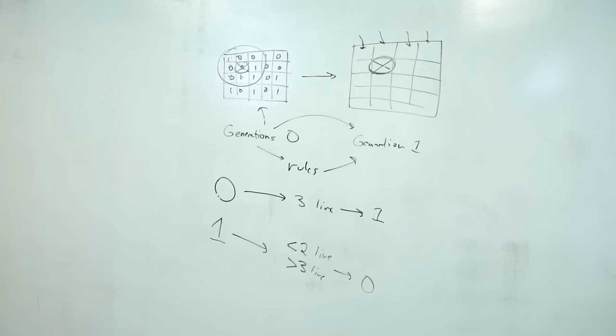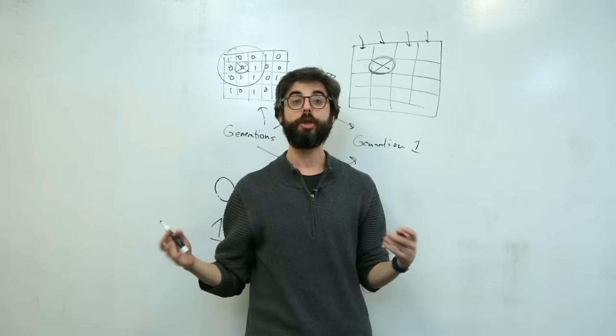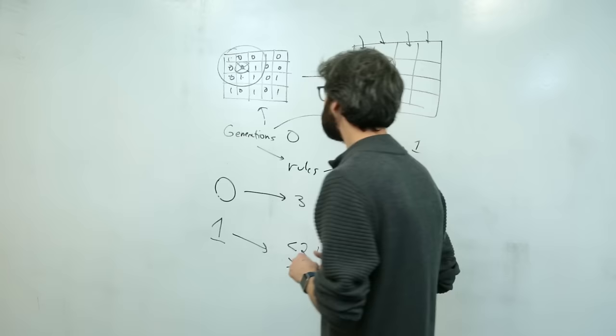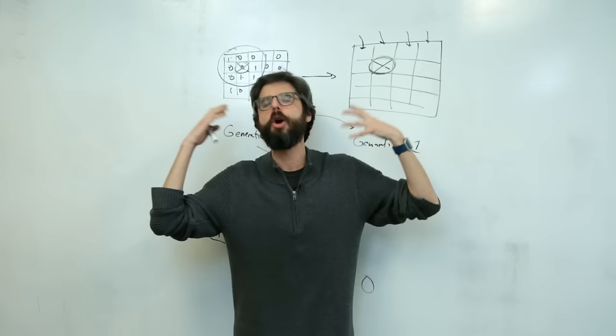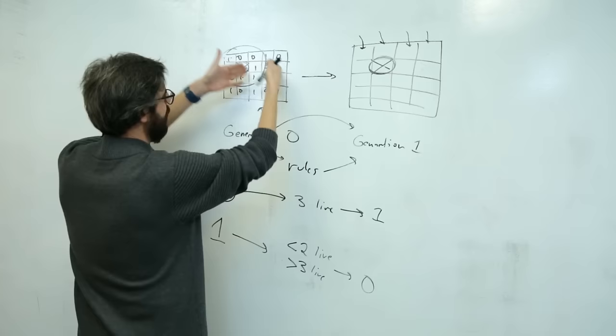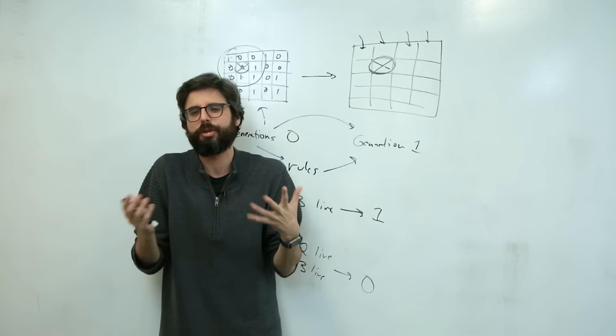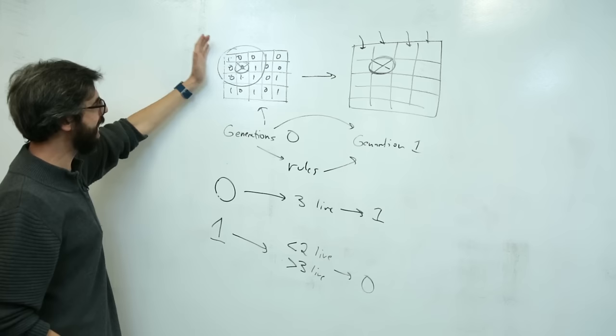I need a data structure to store this grid. The way I've always done this in previous examples is by using something called a two-dimensional array — I have a video tutorial about that which I will link to in this video's description. Two-dimensional arrays are kind of not so much fun in JavaScript; there really is no such thing as a two-dimensional array. It's really just an array of arrays. Each row is an array, and the grid is an array of rows. I think I'm going to do it that way.